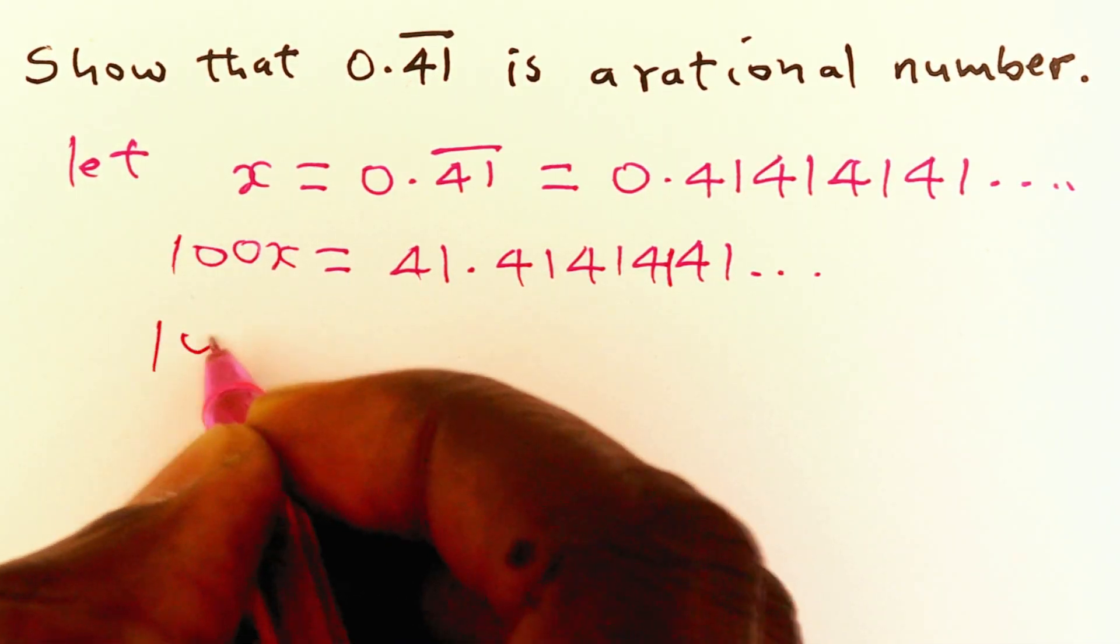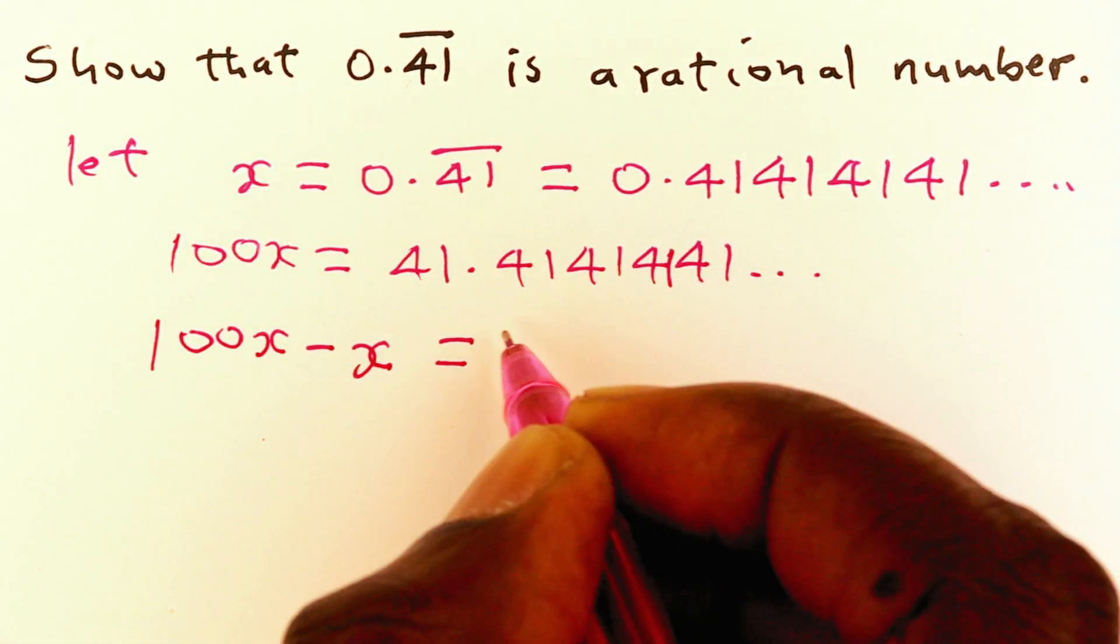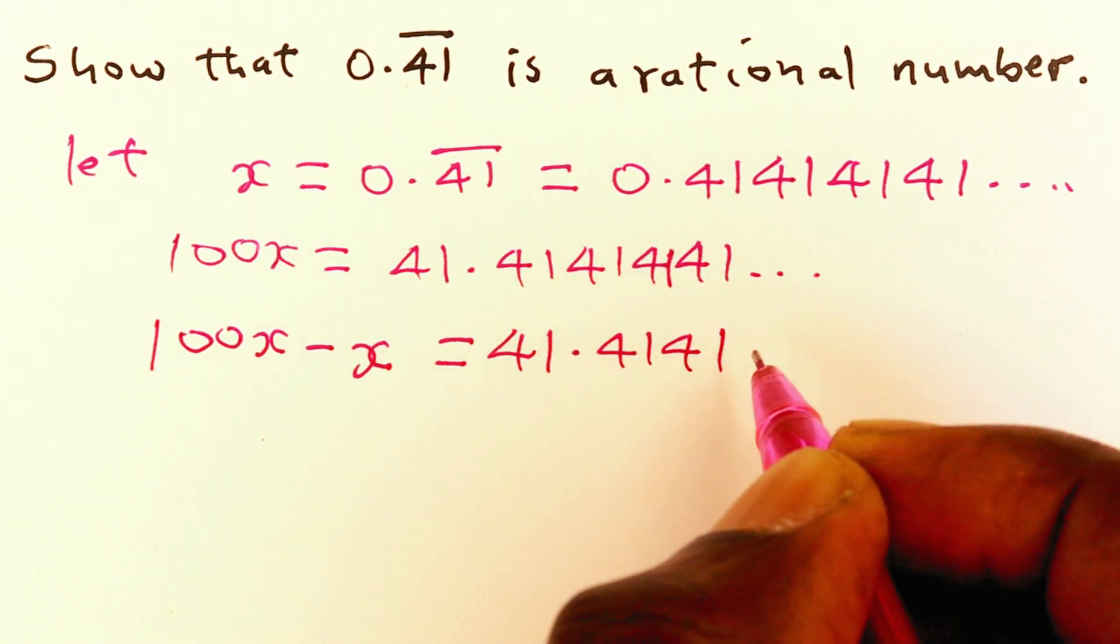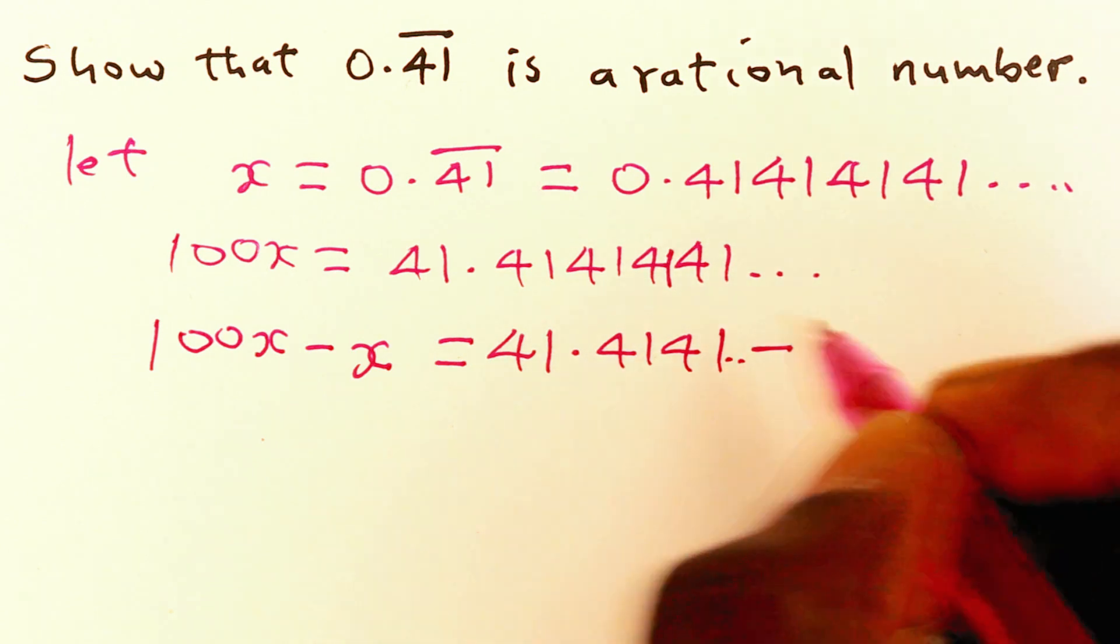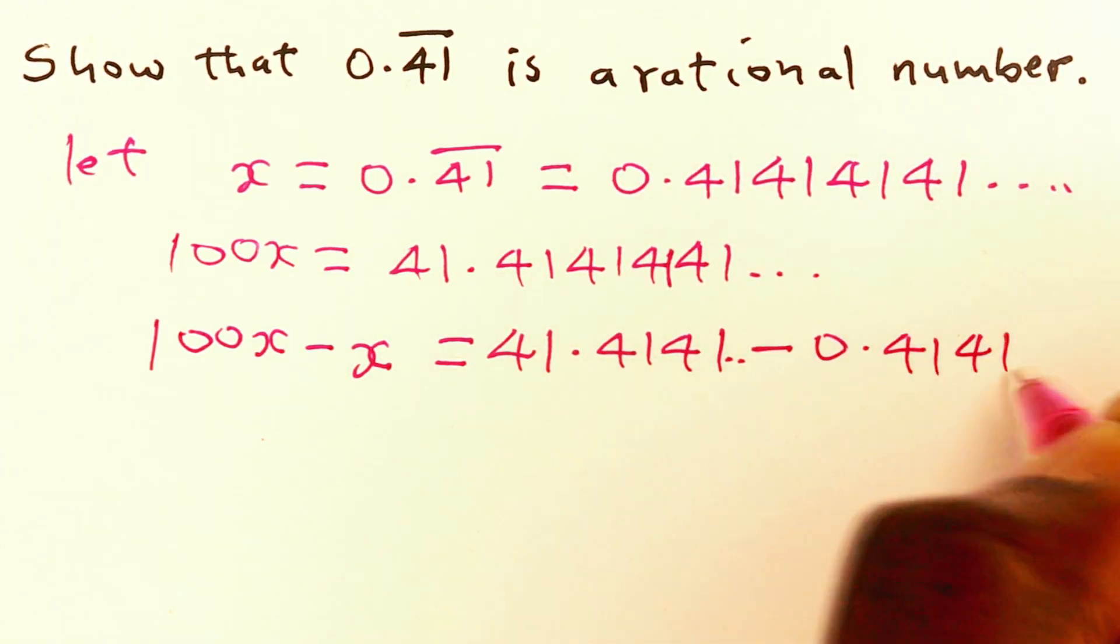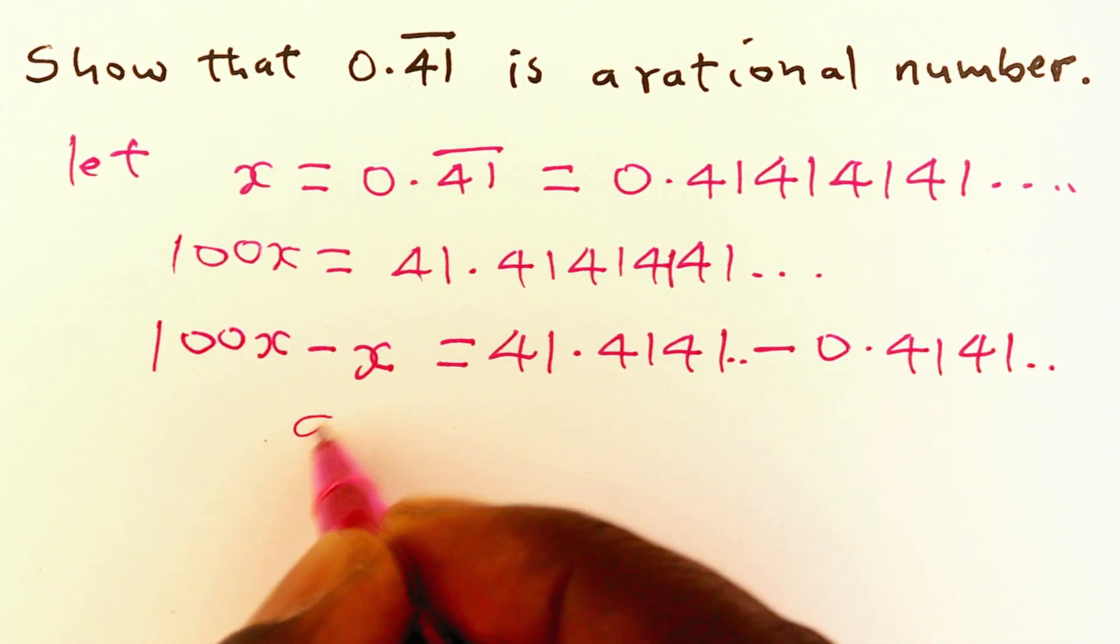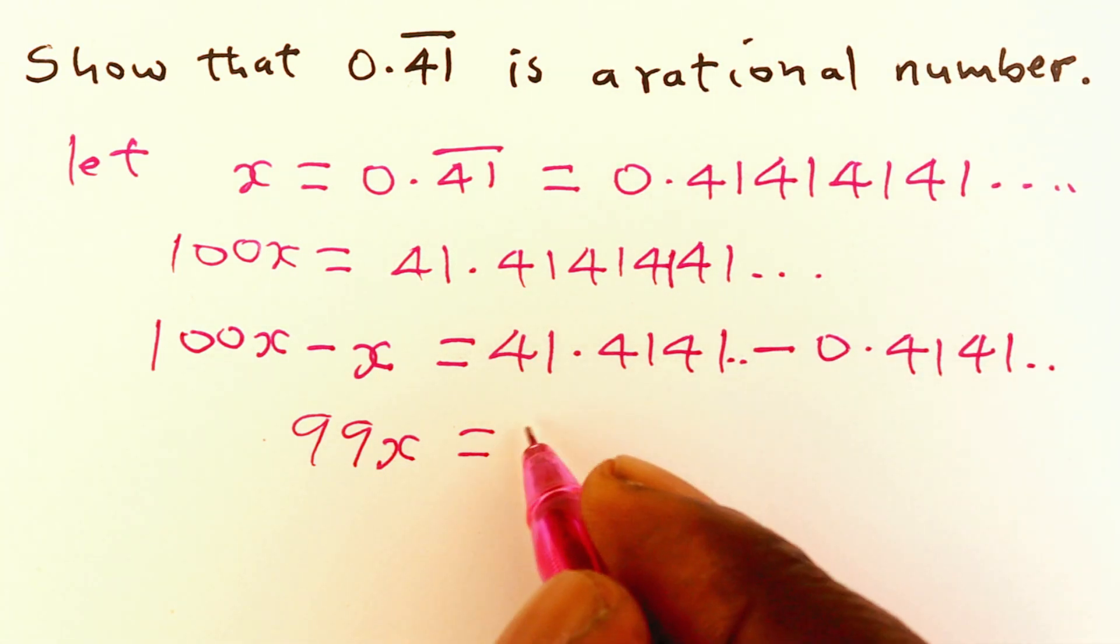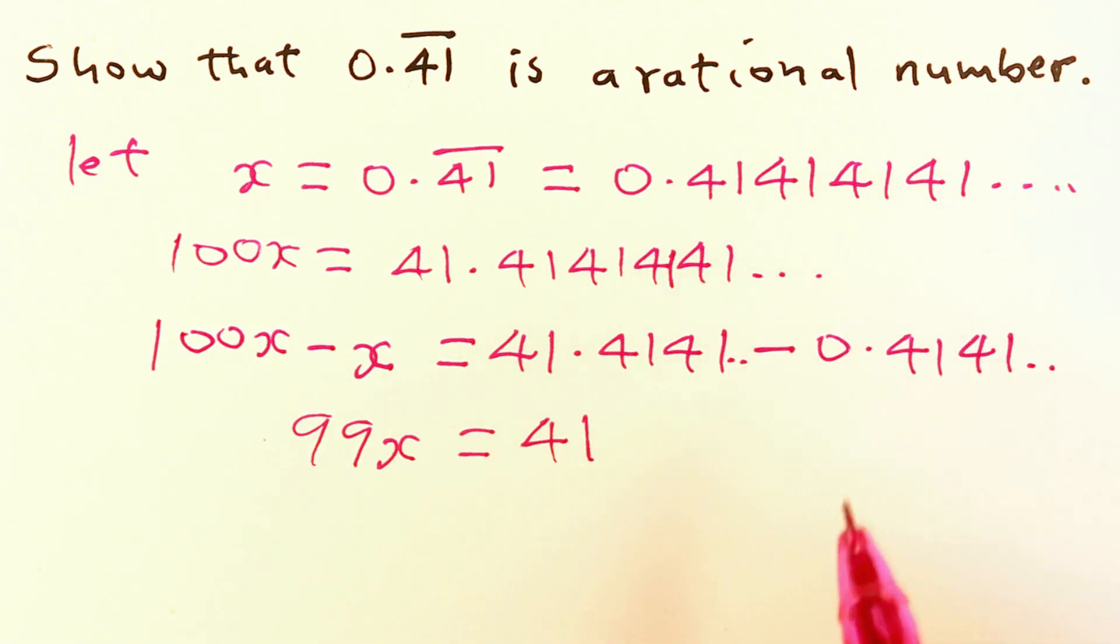So we have 100x minus x is equal to 41.41 recurring minus 0.41 recurring. We're going to get 99x is equal to 41. The recurring part will disappear because you subtract the two.